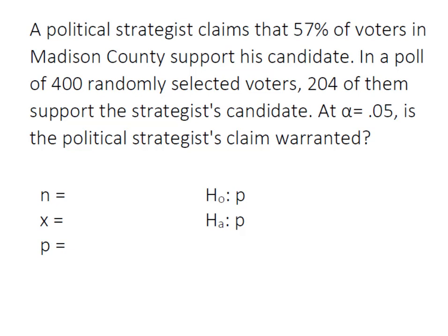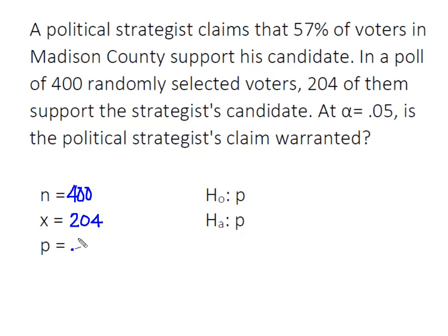We're going to let Minitab do a lot of the work, but first we're going to gather up our information. So we had an N, or a sample size, of 400, and out of those 400, 204 of them supported this candidate — that's our value of X. The claimed value of the population proportion is 57%.